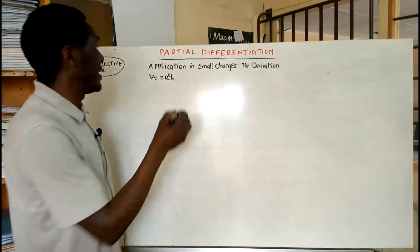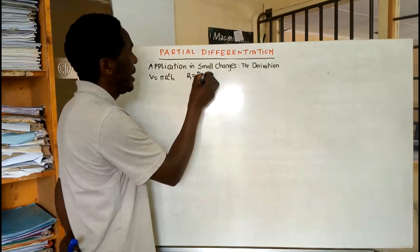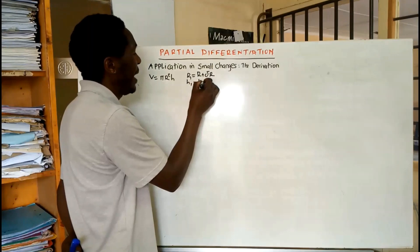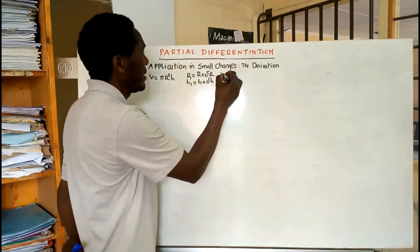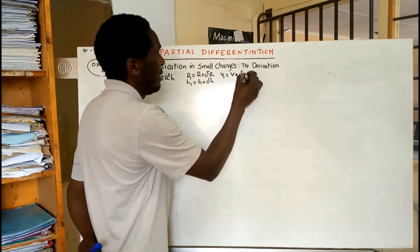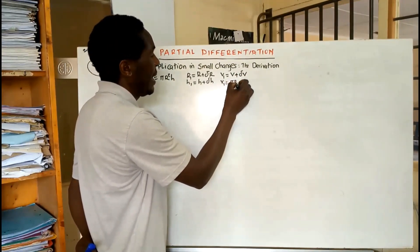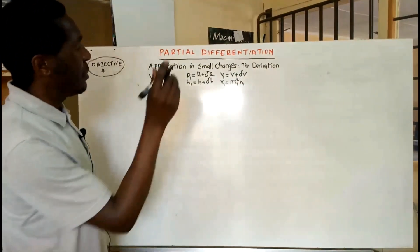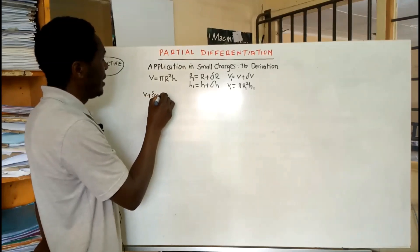Let there be a small change in each of those variables, such that r sub one is equal to r plus a small change in r, and h sub one is equal to h plus a small change in h. That means V sub one is also V plus a small change in V, and remember V sub one is equal to pi r one squared times h sub one.